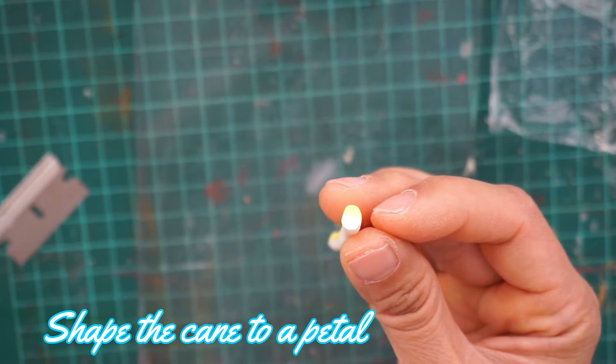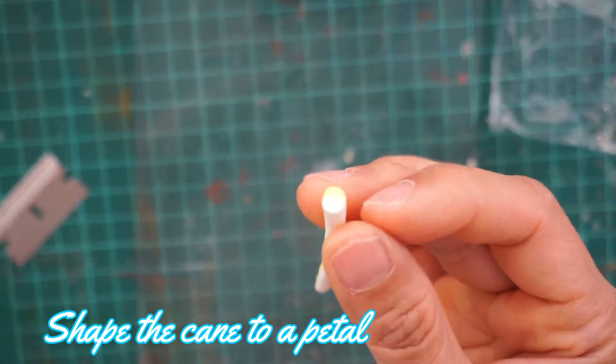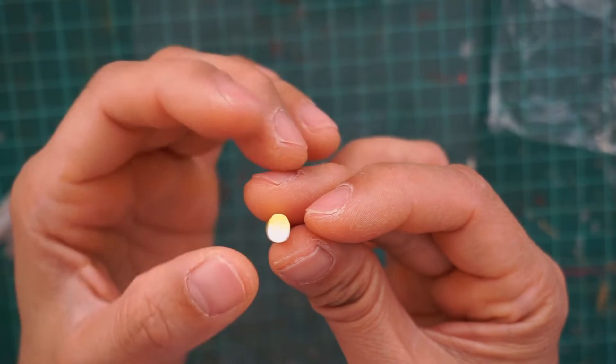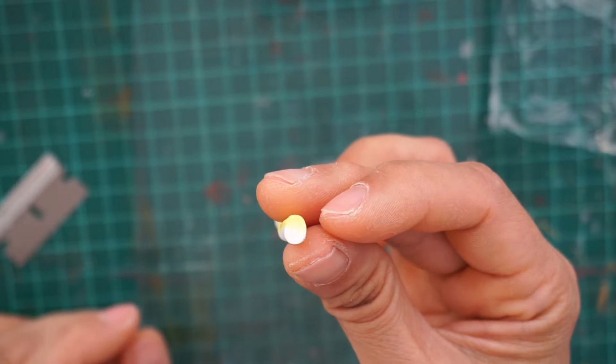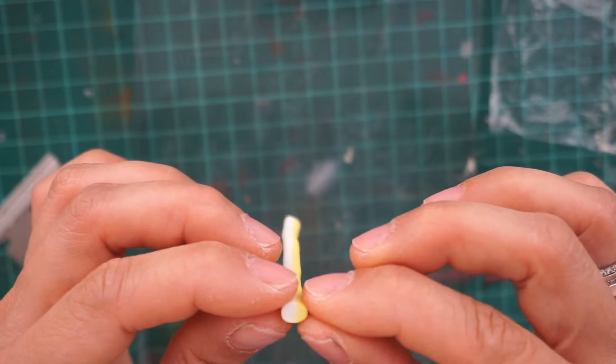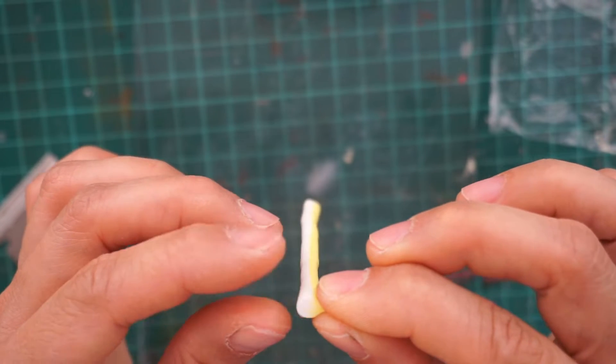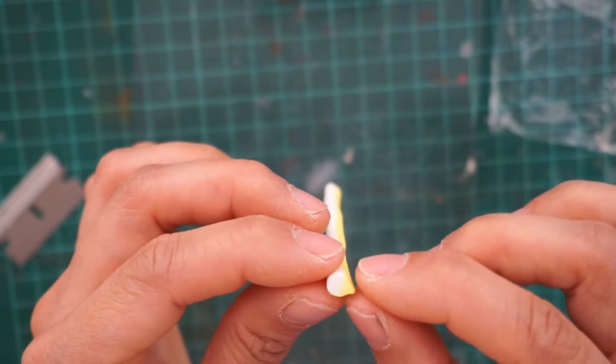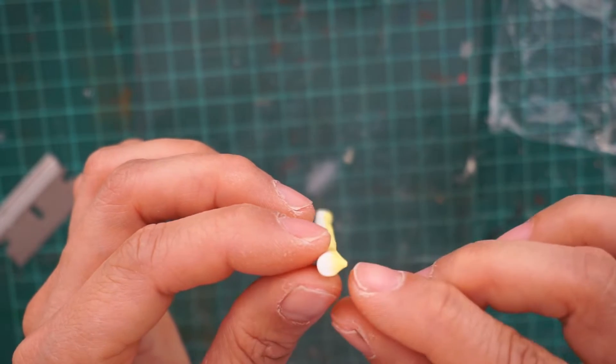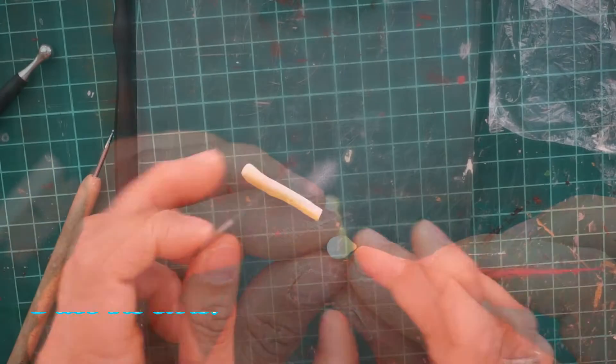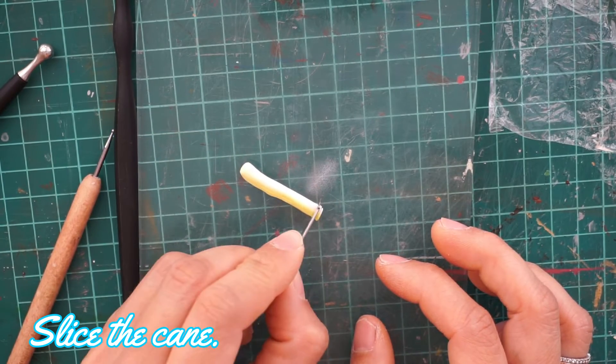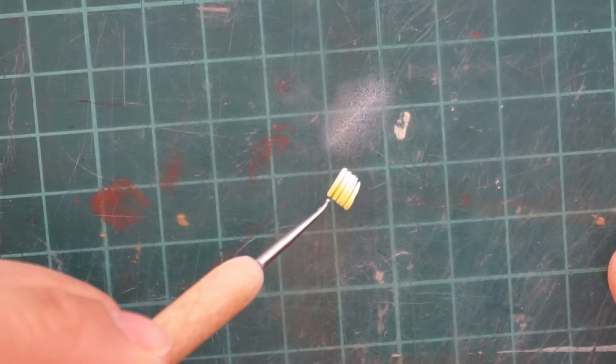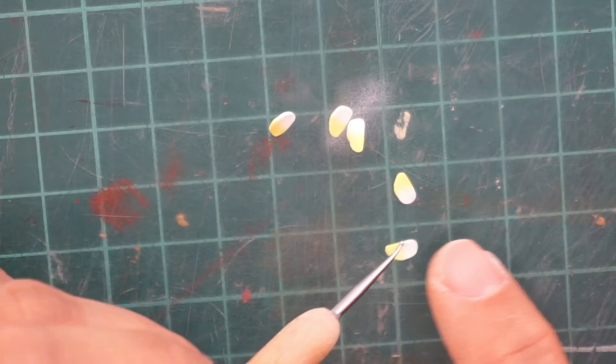This is now the reduced cane. It has the smaller yellow and bigger white part. Pinch the yellow part with your index finger and thumb so it will resemble a petal. Then slice the cane thinly for the individual petal.